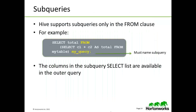The Hive query language supports subqueries, but only in the from clause. For example: select total from, then the subquery. Please note the subquery must have a name. The columns in the subquery select list are available in the outer query.